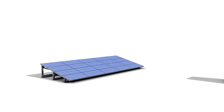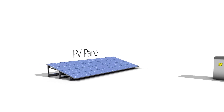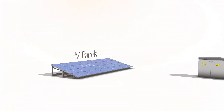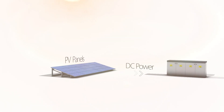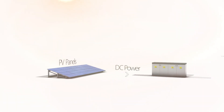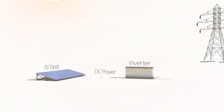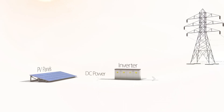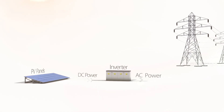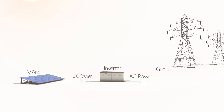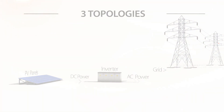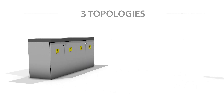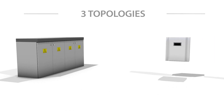A photovoltaic system is made up of panels which produce DC power when exposed to sunlight, and an inverter which converts the DC power into AC power that is fed into the utility grid. In commercial rooftop and ground mount PV systems, there are three different inverter topologies.